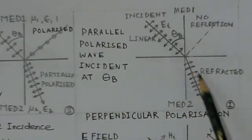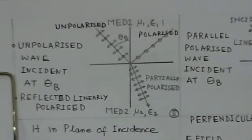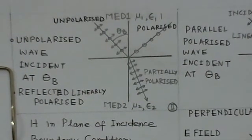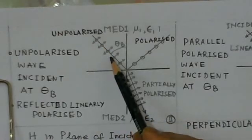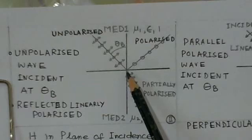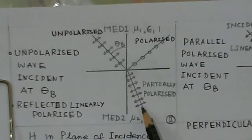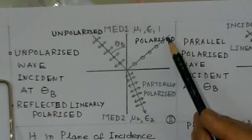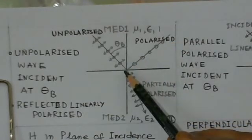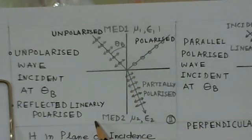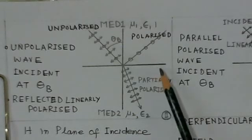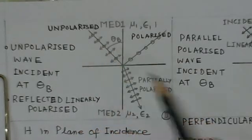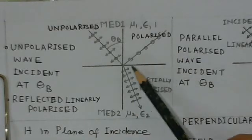For the other case: if we take an unpolarized wave incident on the surface of the dielectric, a partially polarized wave comes out as a reflected wave. The reflected wave is linearly polarized. Sometimes this angle is also called the polarizing angle, because at Brewster's angle the reflected wave turns out to be a polarized wave. Circularly polarized waves incident at this angle could also give a reflected component. These are some very special and important cases.